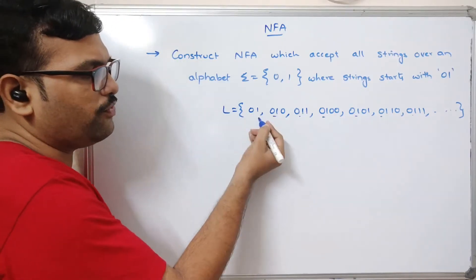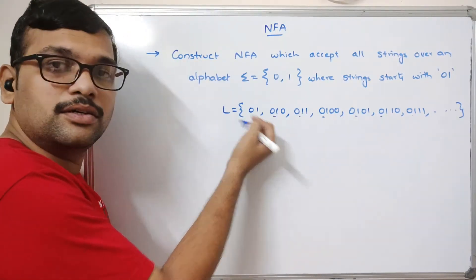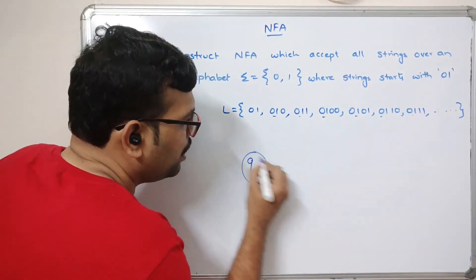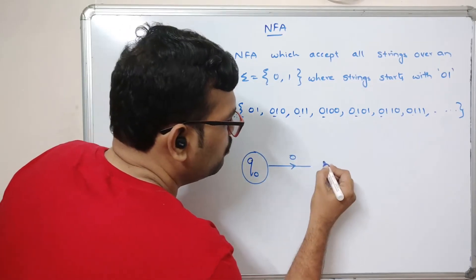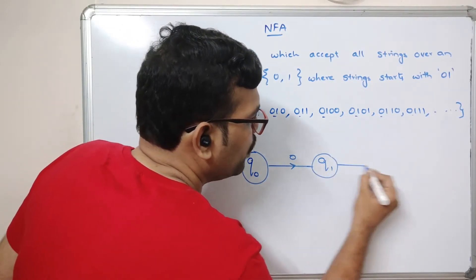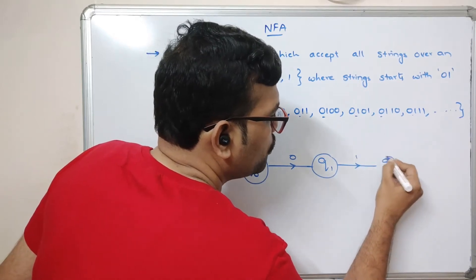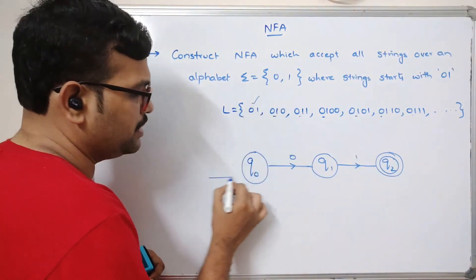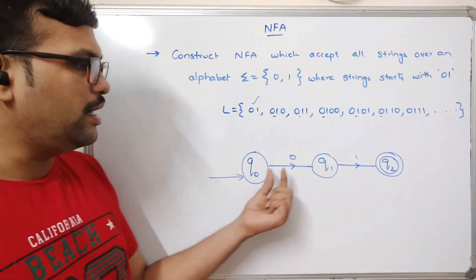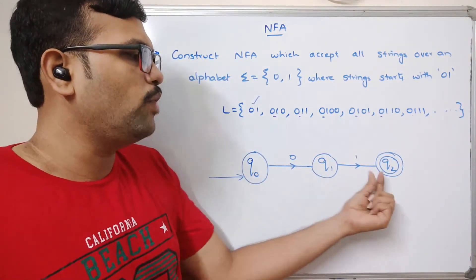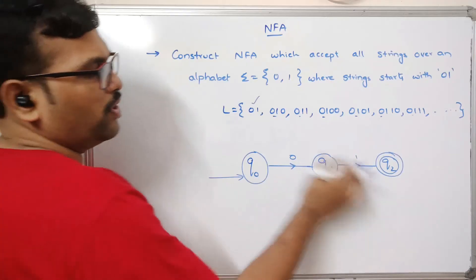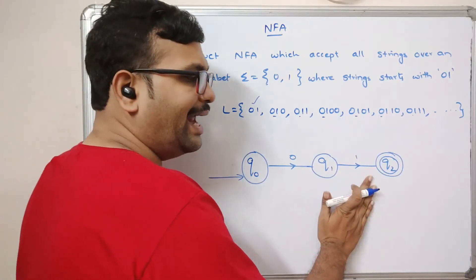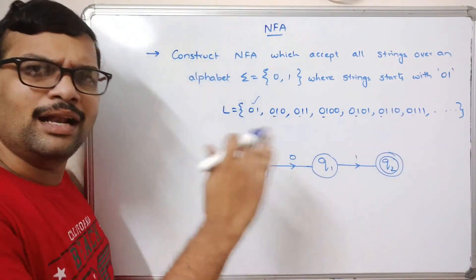Taking the first string of length 2, we need three states. Q-naught on input 0 moves to Q1, and Q1 on input 1 moves to Q2. Q-naught is the initial state. This satisfies the string '01'. For string '010', after the prefix '01' we need to handle additional characters.